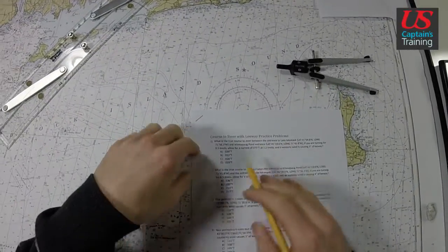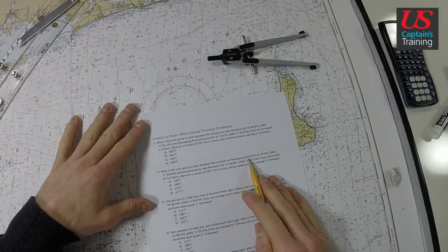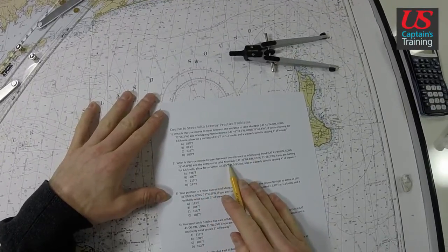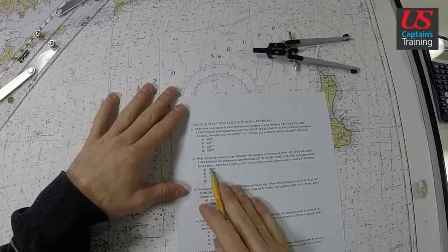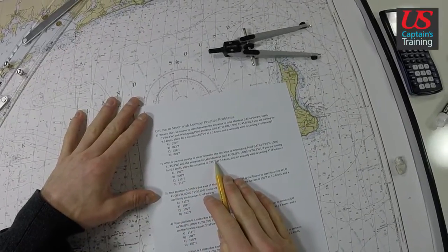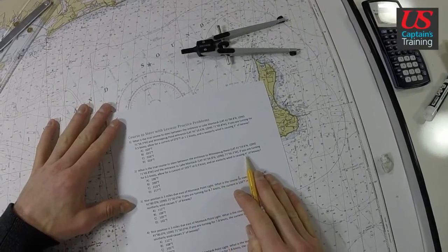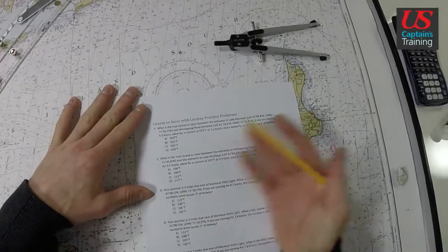Course to steer with leeway practice problem 2. What is the true course to steer between the entrance to Winnipeg Pond and the entrance to Lake Montauk if you're turning 6.5 knots? Allow for a current of 295 degrees true at 0.9 knots, and an easterly wind is causing 4 degrees of leeway.